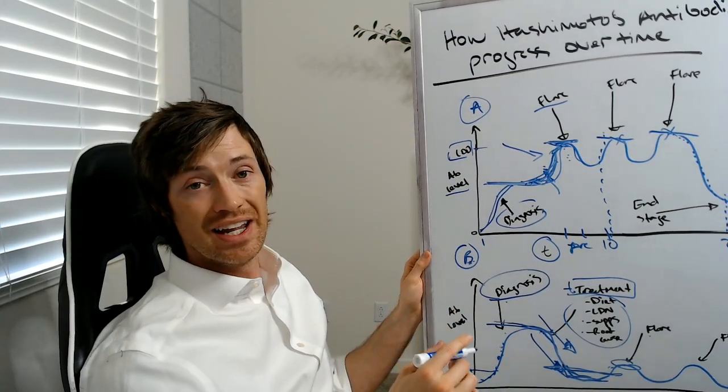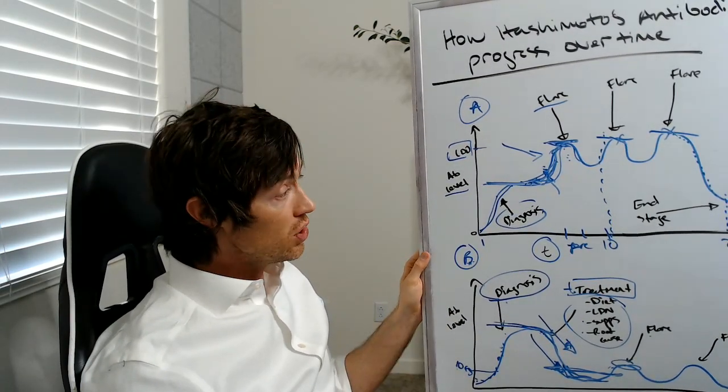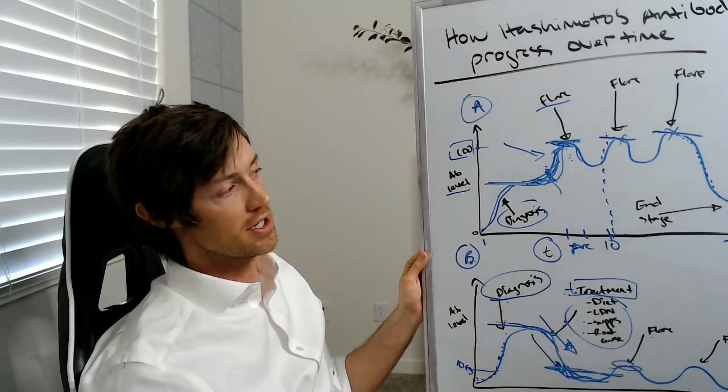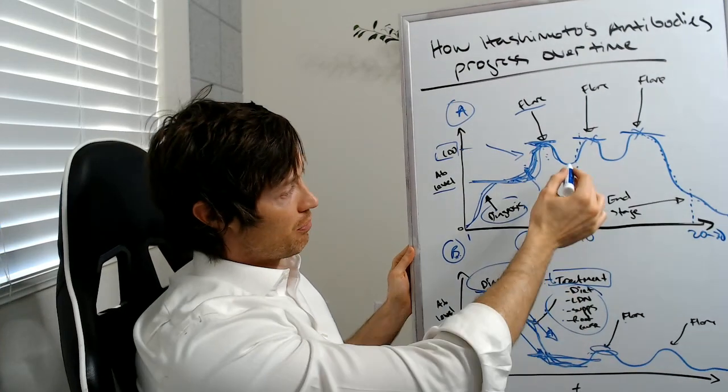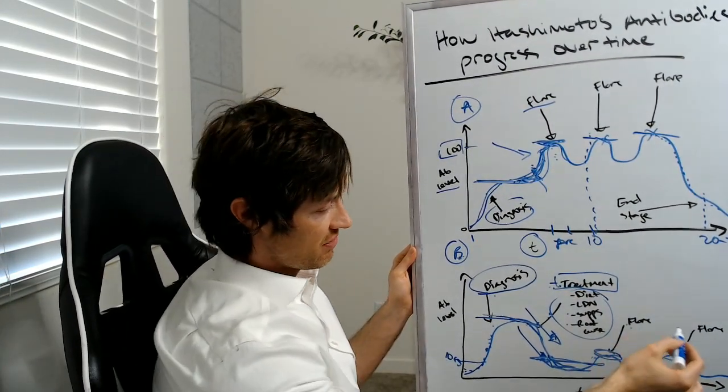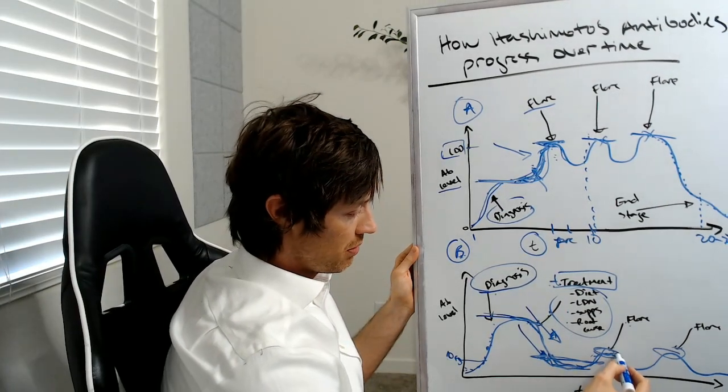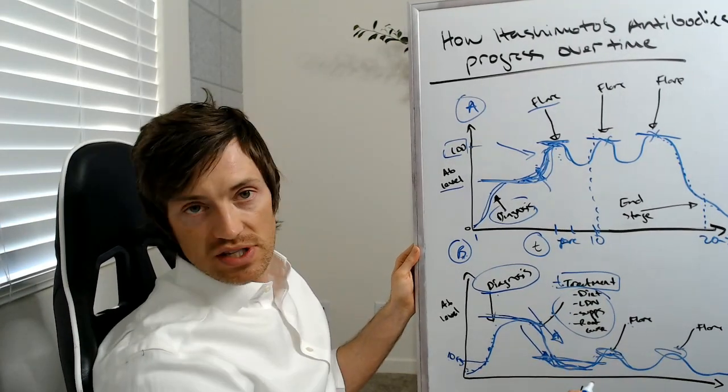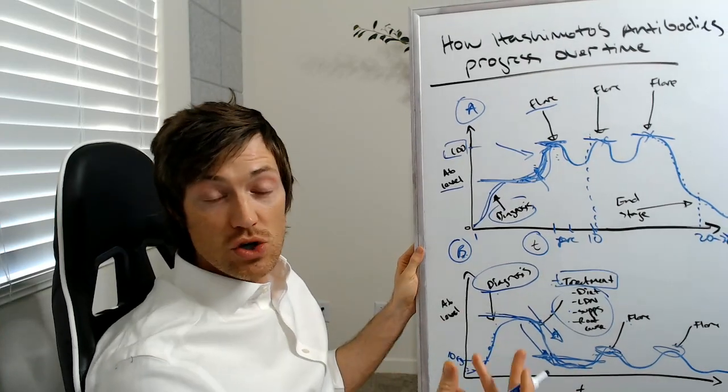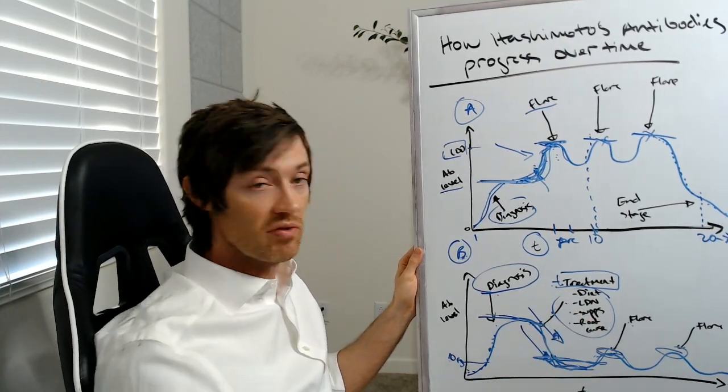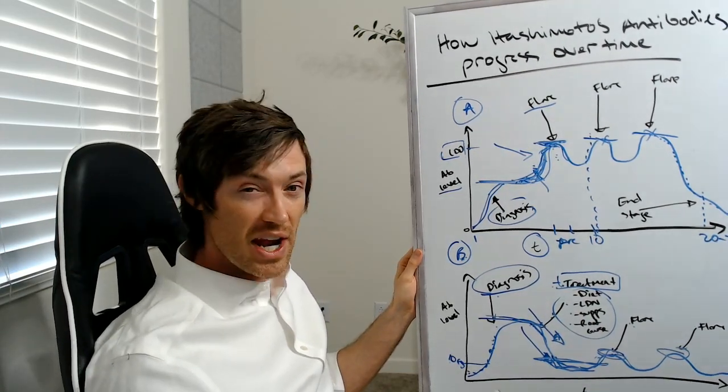This is the reason that it's so important for you to manage your Hashimoto's as early as you possibly can and to manage those thyroid antibodies. Now again, like I said, compared to Person A, you will have a couple of flares. I've only included two here, but you can see this is a flare, this is a flare. The antibodies go up a little bit, then they go back down because you may have to be a little more aggressive during this time period with the supplements you're taking. You may have to readdress things like H. pylori or EBV infections. You may have to increase your dose of LDN temporarily.